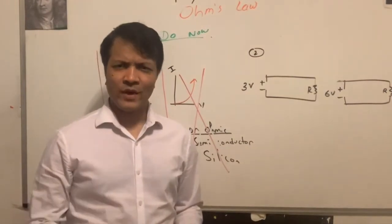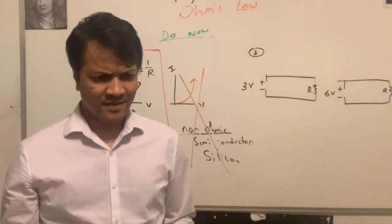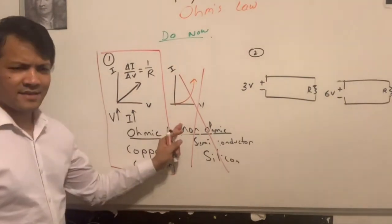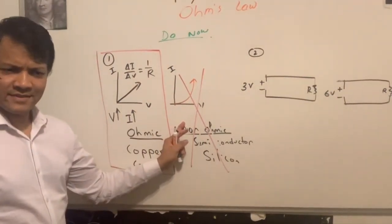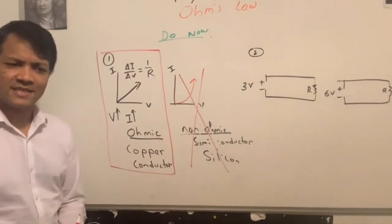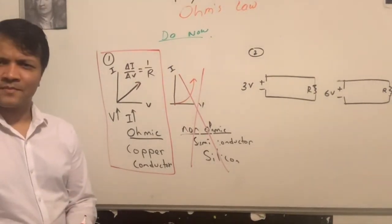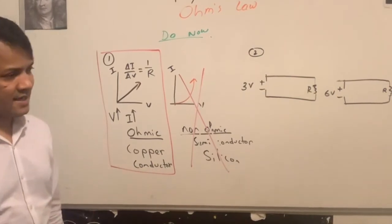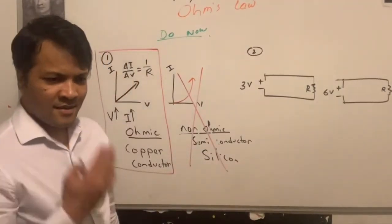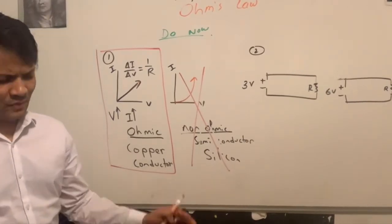But when do we call something law? When it's always true. When it's always true for everything. For example, Newton's first law, second law, third law. But this law seems like it fails for things that are made of semiconductor. But we do still call it Ohm's theory. Is germanium also non-ohmic? I heard it's a non-metal. Yes, anything that's non-metal is non-ohmic. All right, let's go over here. We're going to keep calling it Ohm's law.